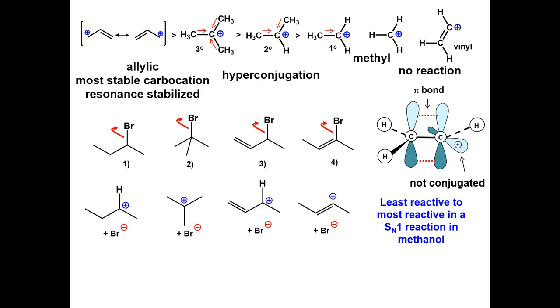Knowing this, you know the answer. The allylic alkyl halide, 3, will be the fastest. Followed by the tertiary alkyl halide, 2. Secondary, 1. And the slowest, or no reaction at all, will be the vinyl bromide, 4.